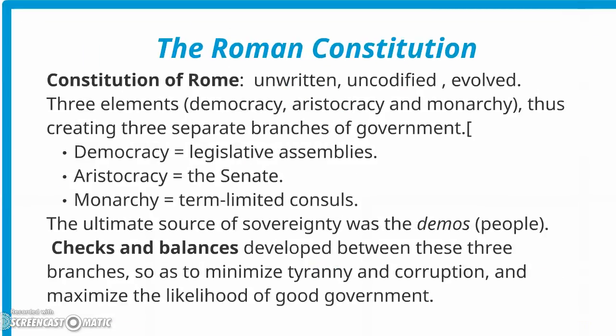The Romans also developed a constitutional form of government. The Roman constitution was unwritten, uncodified, and evolved with time. It had three elements: democracy, aristocracy, and monarchy. The democracy was covered in the legislative assemblies, the aristocracy by the senate, and the monarchy in term-limited consuls. The ultimate source of sovereignty in the Roman republic was the demos — the people — which is the Greek word from which we get our word democracy. Checks and balances developed between these three branches so as to minimize tyranny and corruption and maximize the likelihood of good government in Rome.